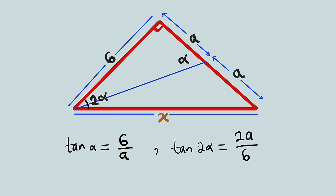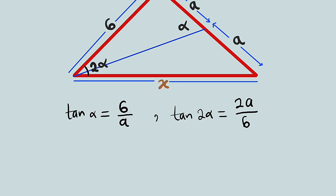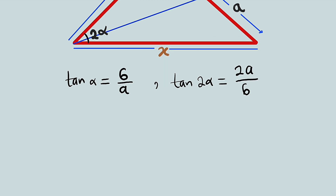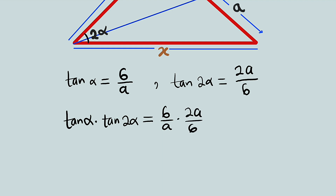Remember, we are applying logic here. Let us multiply tan(alpha) by tan(2 alpha) together. That is tan(alpha) × tan(2 alpha) = (6/A) × (2A/6). Observe that A cancels A, and 6 cancels 6. All we have left is 2.